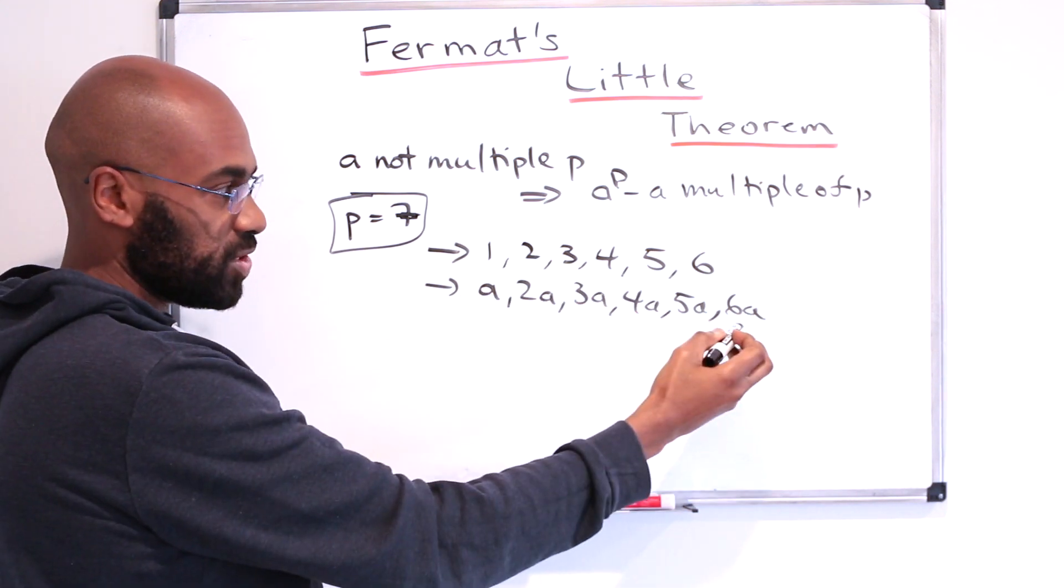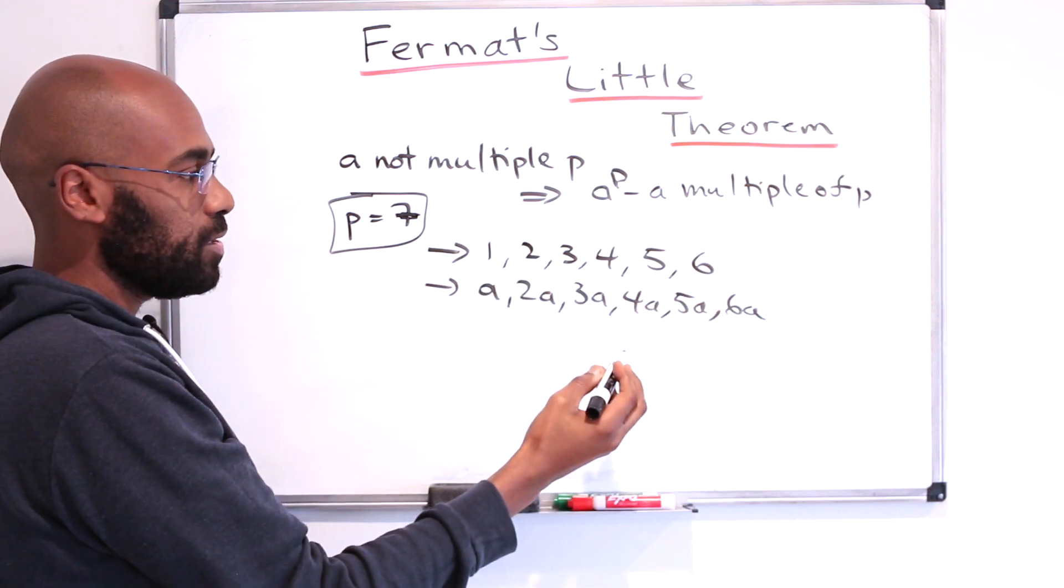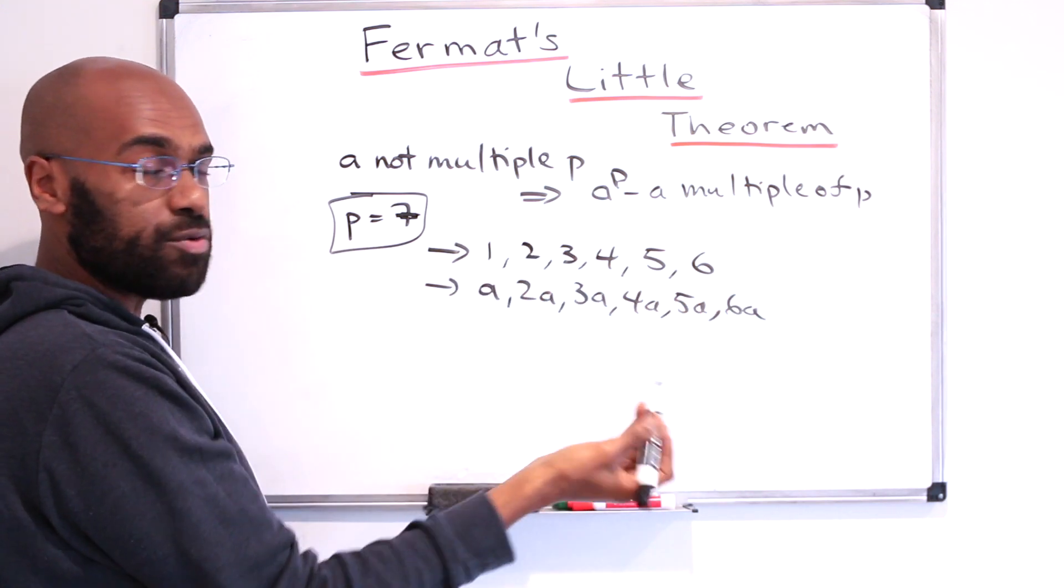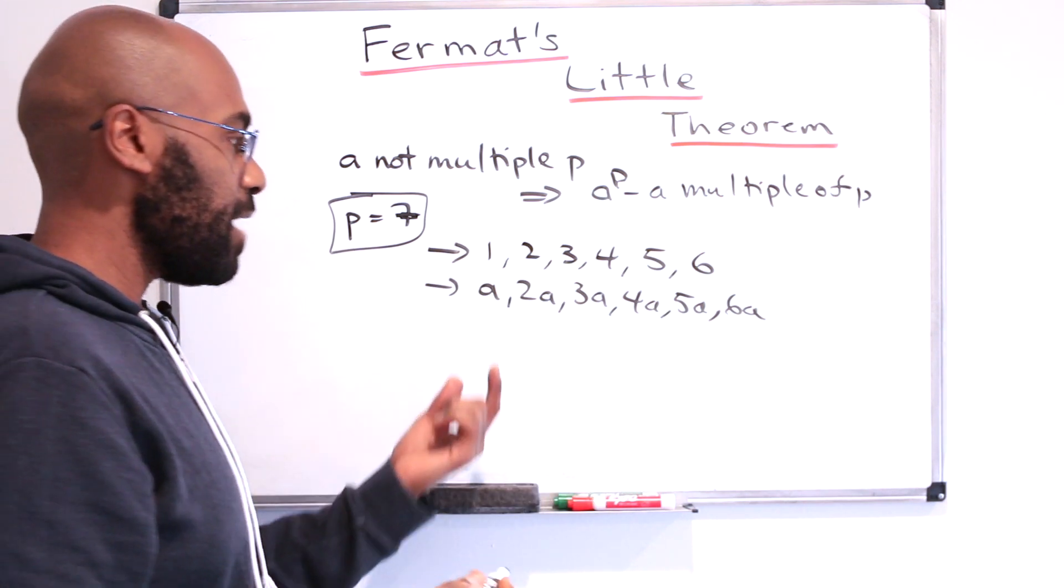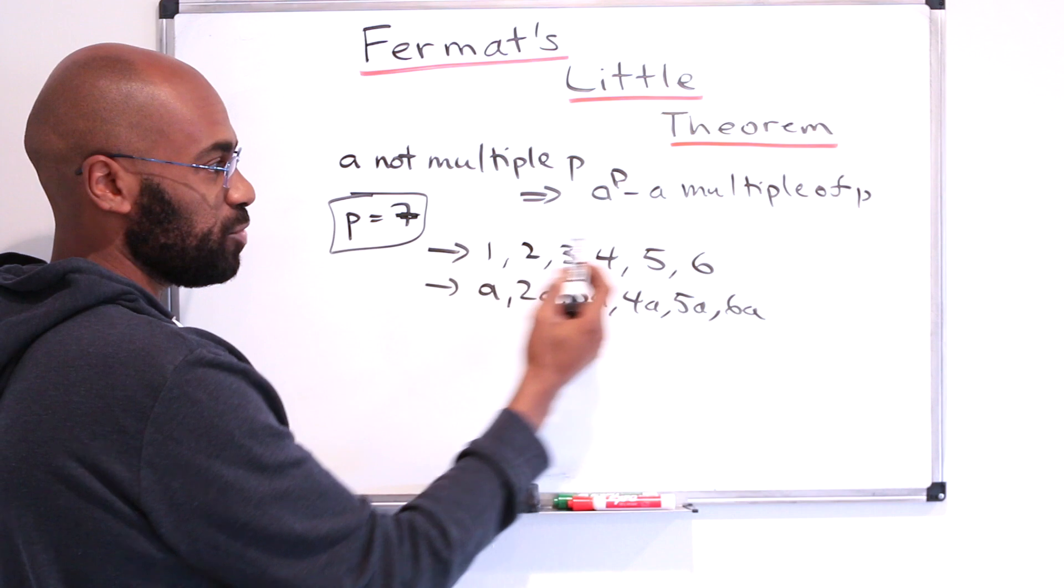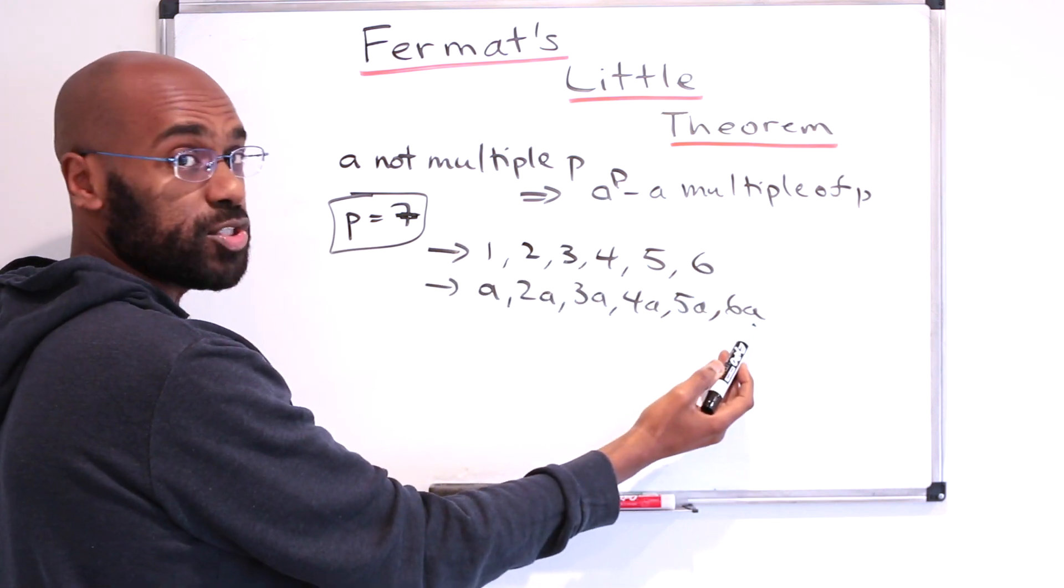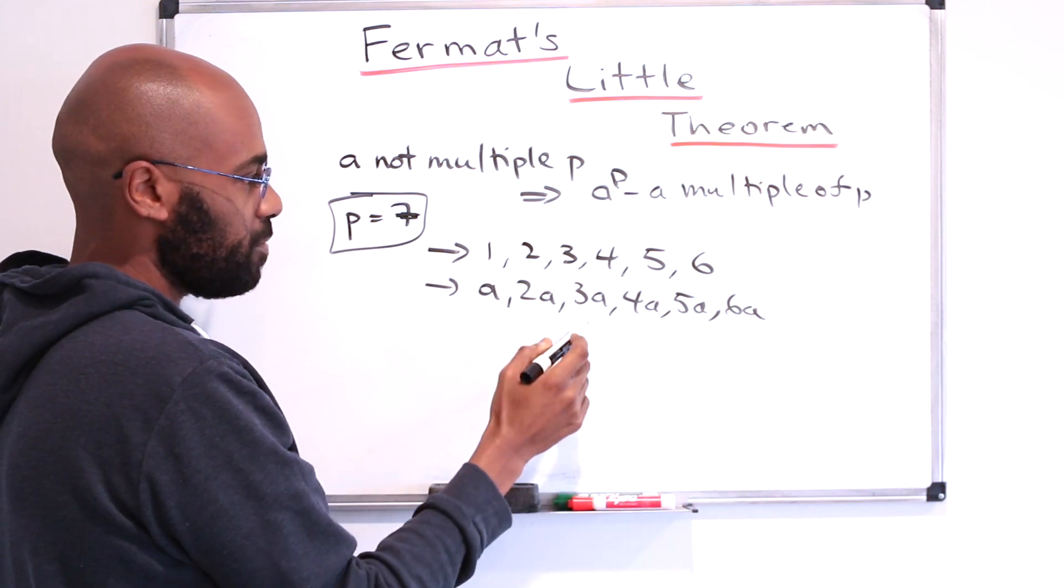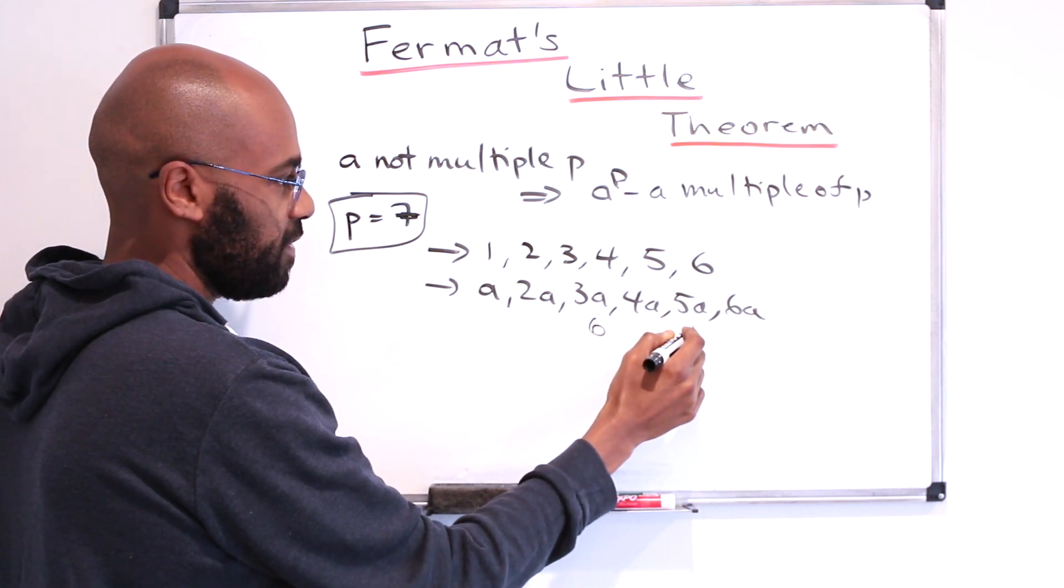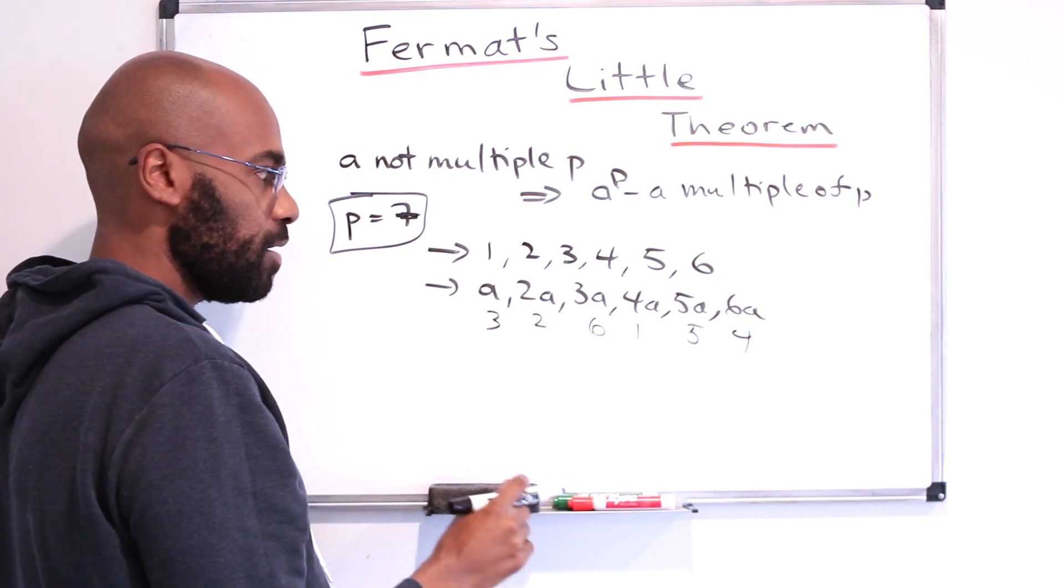So we have 6 numbers, each of which leave a different remainder when divided by 7, none of which leaves a 0 remainder. That means if we were to list the remainders out, they'd have to be a rearrangement of these 6 numbers, because these are 6 numbers between 1 and 6, and they're all different. So it might be something like 6, 5, 1, 2, 3, and 4, or something different.